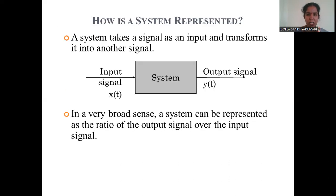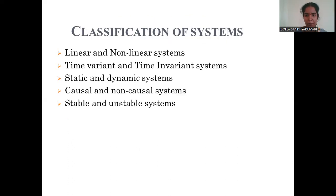A system is represented using a basic block diagram, which takes an input signal X(t) and produces an output Y(t). In a broad sense, a system can be represented as the ratio of the output signal over the input signal.